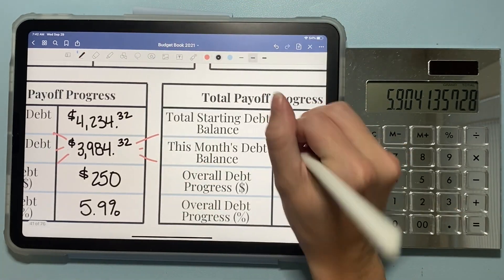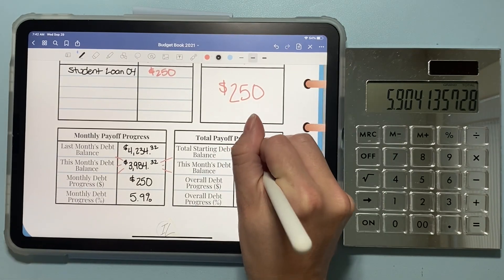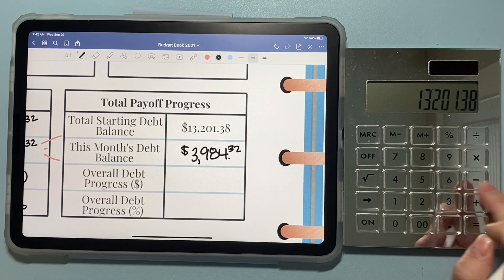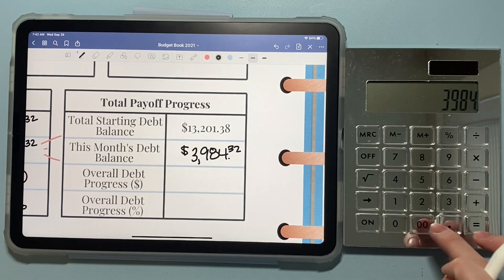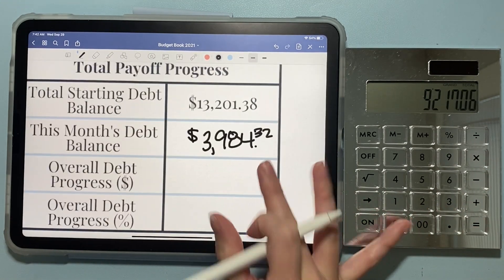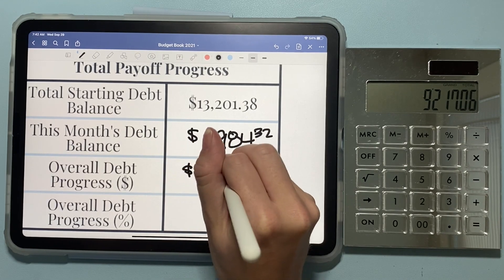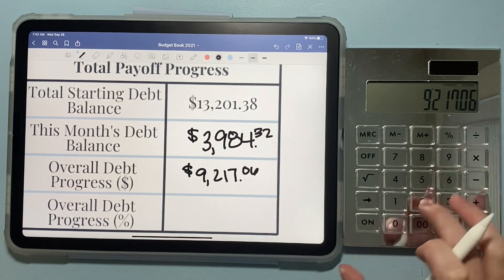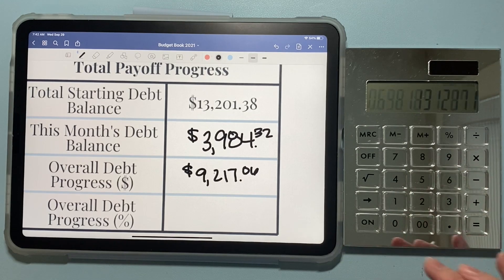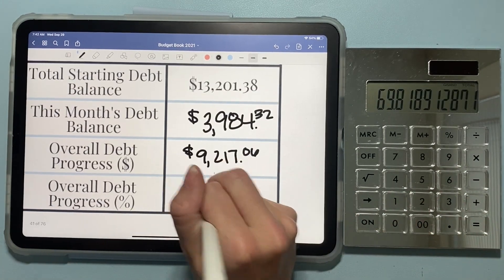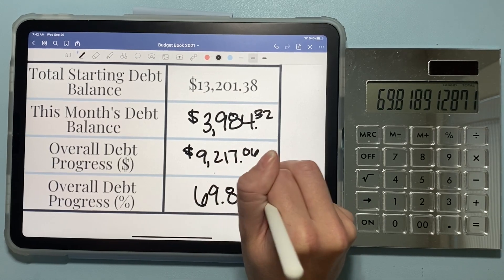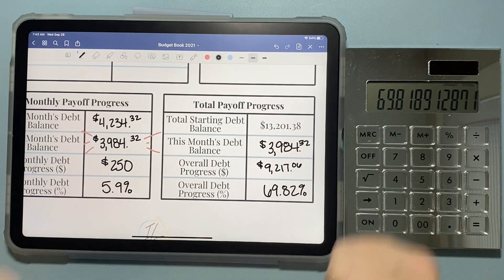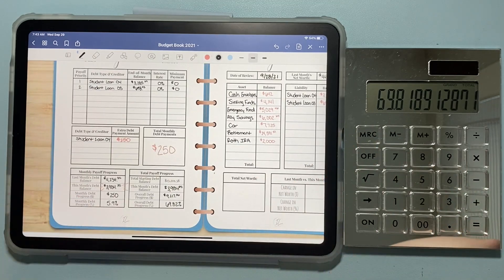So now let's see what percentage that was. So $250 divided by what our starting balance was means that we paid off 5.9%, so almost 6% of our debt balance this month. So that was really good. I'm really excited about this under $4,000 number. So now let's see what our overall progress is. Since we started this journey, we started with over $13,000 in debt. And now we are under $4,000. So we have paid off $9,217.06. And that means we are 69.82% done. So a little over two thirds of the way done, less than $4,000. We got this. So that is really exciting, a new milestone that we hit.